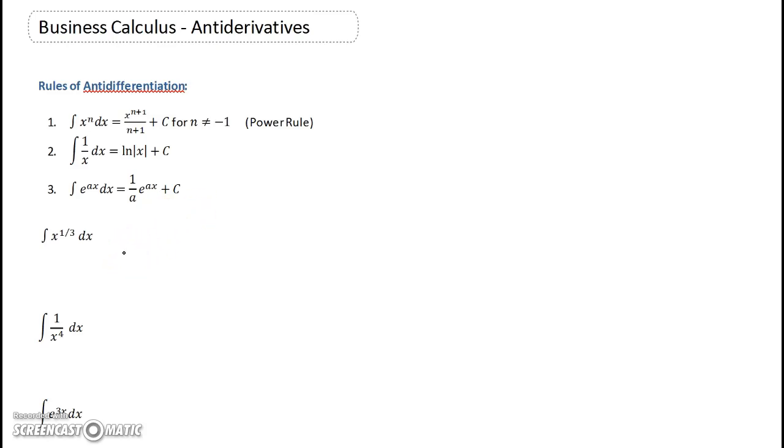Alright guys, today we're going to look at the rules of antidifferentiation. If you check your book, you will find a table similar to this one where you have that the antiderivative of x to the n is going to be x to the n plus 1 over n plus 1 plus a constant of integration C.